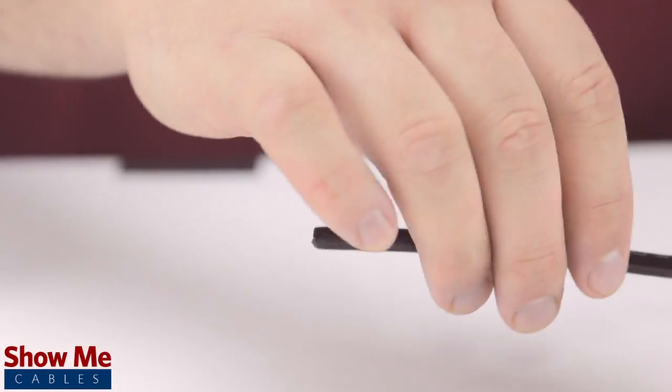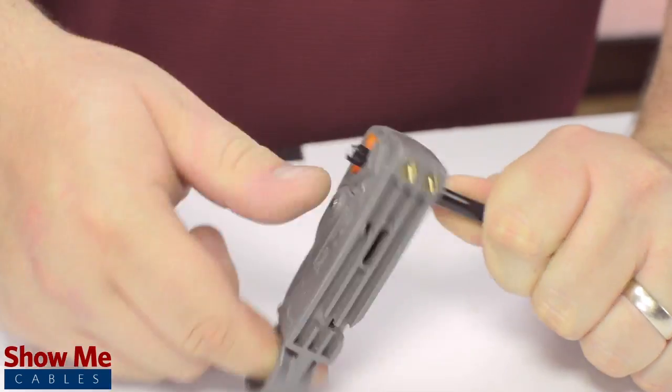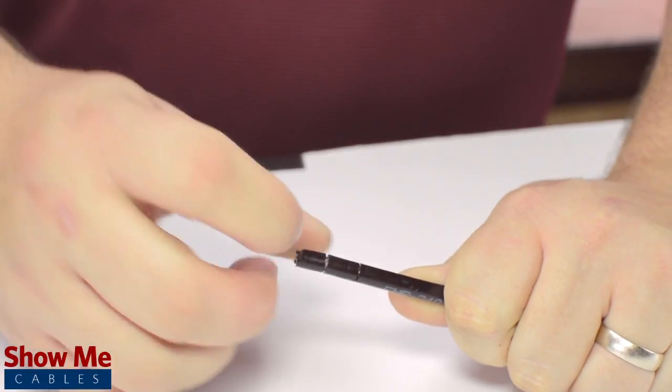Start by inserting the ferrule over the outer jacket of the cable. Then using your cable stripper, strip back the outer jacket and dielectric.